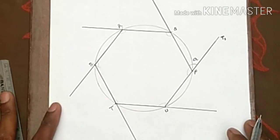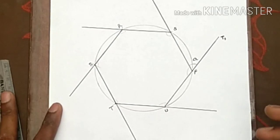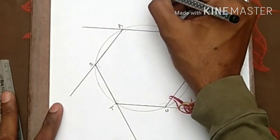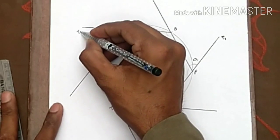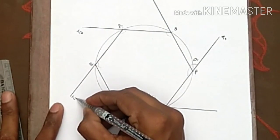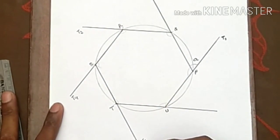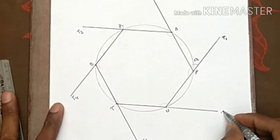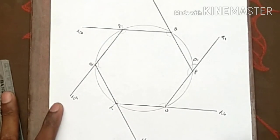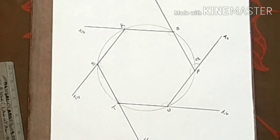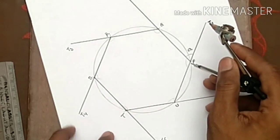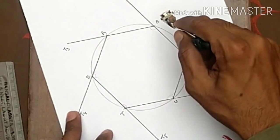After drawing angle A, extend the other five sides to points T2, T3, T4, T5, and T6 to create all six exterior angles. Then mark all the angles using your compass.